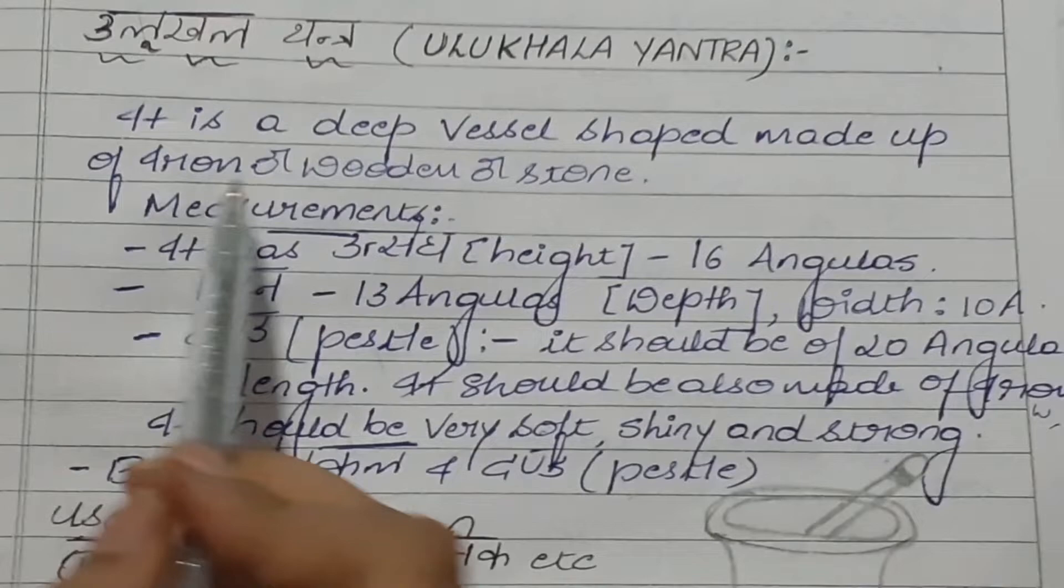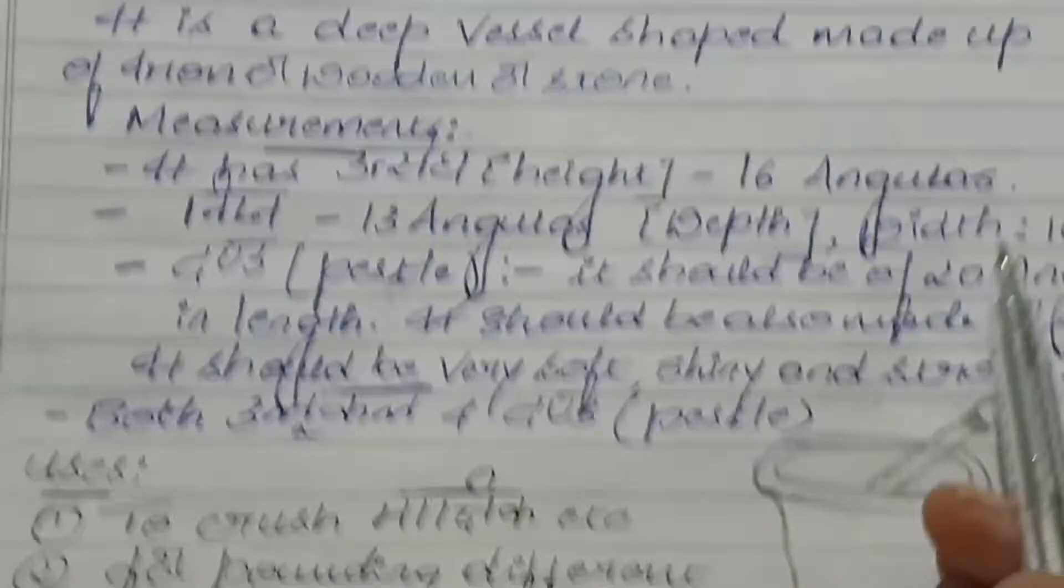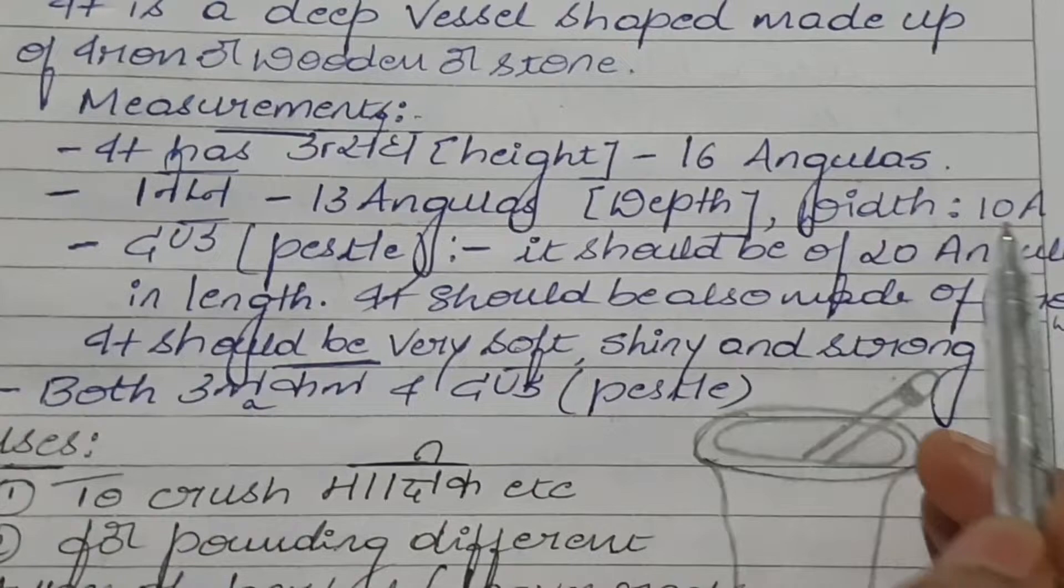Ulukala Yantra is a deep vessel shaped, made up of iron, wooden, or stone. Its measurements are: height of 16 angulas, depth of 13 angulas, and width of 10 angulas.